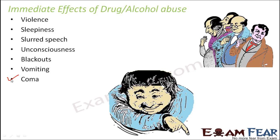People can even go into a coma, because if the intake is too high, the entire central nervous system gets affected. When the brain gets disrupted, all other parts of the body are affected, and a person can go into a coma or even die. Death can happen directly or indirectly - sometimes people under the influence of alcohol drive and meet accidents, or get into fights that turn fatal. People sometimes commit crimes, and deaths are very common when under the influence of alcohol. Aggressive behavior with friends and family is also observed.